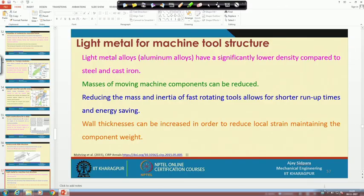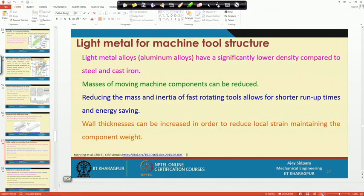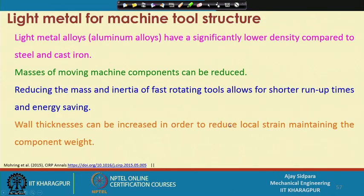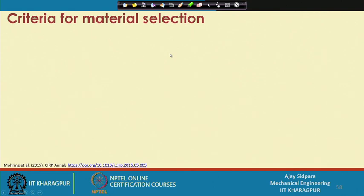These types of options are very important to understand how we can make the system economically without deviating from the required goal. What we discussed in the last class — lightweight material and criteria for material selection — is that once we know the final design, we have to finalize the properties by which we can select the different materials.